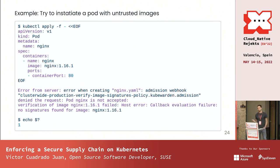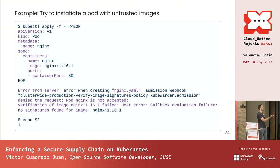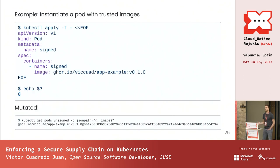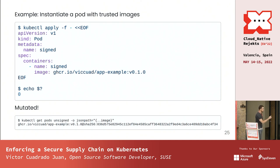Once the ClusterAdmissionPolicy is active and enforcing, if you try to instantiate a pod with an untrusted image like nginx, which is not signed by us, you get: 'Verification of image failed. No signature found.' If you try to instantiate something that is trusted, the pod launches and it mutates — the image gets the tag plus the digest appended at the end, so nobody can substitute that tag in the future.